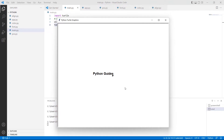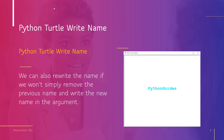You can see that the name PythonGuides is written on the screen with the help of turtle.write() function. We can write any name of our choice anywhere using turtle.write(). We can also rewrite the name by simply removing the previous name and writing the new name in the argument.